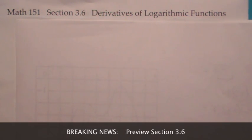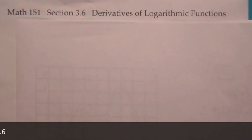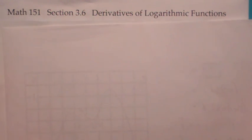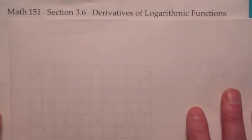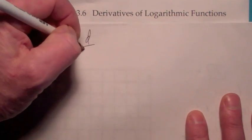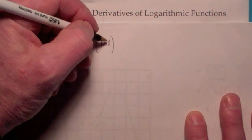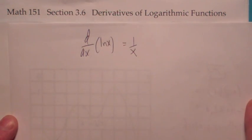In this section, we're going to discuss the derivatives of logarithmic functions. We're going to focus on the derivative of the natural log function. In class, we're going to show that the derivative with respect to x of the natural logarithm of x is 1 over x. We're going to use implicit differentiation to show that.